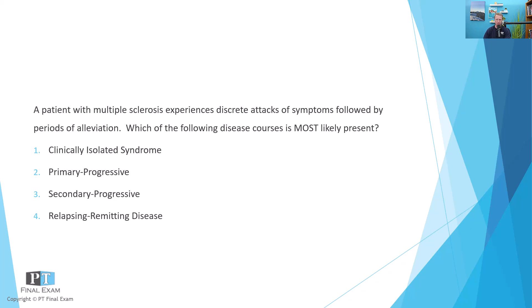A patient with multiple sclerosis experiences discrete attacks of symptoms followed by periods of alleviation. Which of the following disease courses is most likely present? Option one: clinically isolated syndrome. Two: primary progressive. Three: secondary progressive. And four: relapsing remitting disease.